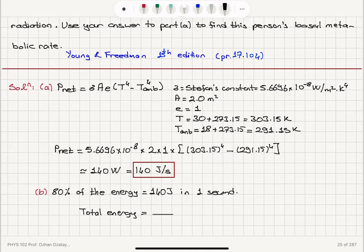It's the net power radiated divided by 0.8, which is roughly 180 watts. So this is our basal metabolic rate.